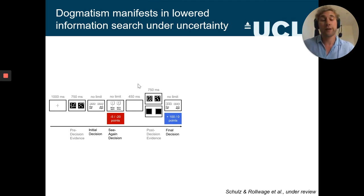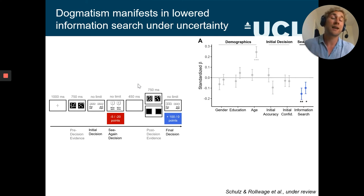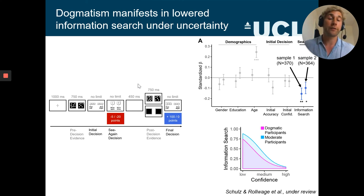And in this kind of task, we found that more dogmatic participants were actually less likely to actively seek out additional information. And again, we replicated this across the two samples. And more specifically, this effect was driven by dogmatic people using their confidence less adaptively in order to inform their information seeking decisions.